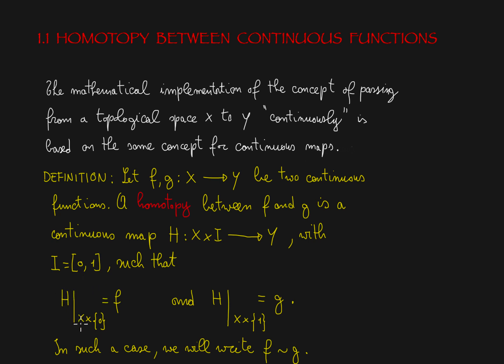That h restricted to x cross 0, which is the base of this cylinder, if we draw this on the basis x, turns out to be like a cylinder. So it has a 0 level and a 1 level corresponding to the points in the unit interval 0 and 1. When we restrict h to x cross 0, we get the function f, and restricting h to the level 1 in the cylinder, x cross 1, we get g. In such a case we write f tilde g, which means that f is homotopic to g.